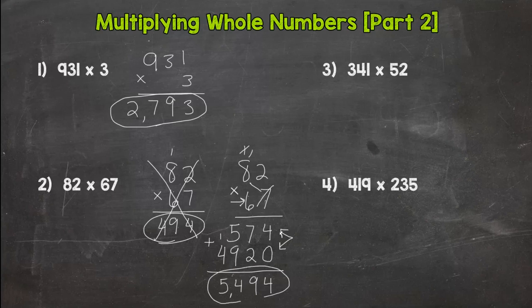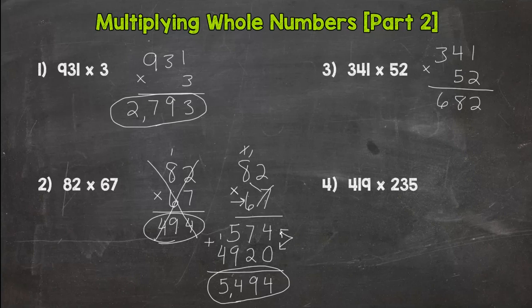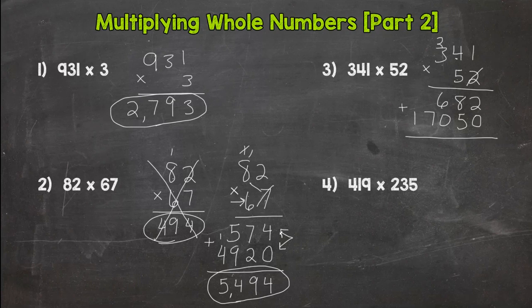Let's step it up a notch. We have a 3 by 2. Same rules apply: take the 2 to every number and then the 5. So 2 times 1 is 2, 2 times 4 is 8, 2 times 3 is 6, done with the 2. Now we need to take that 5, which has a value of 50, so we need a placeholder 0. 5 times 1 is 5, 5 times this 4 right here is 20, and then 5 times 3 is 15 plus 2 is 17.